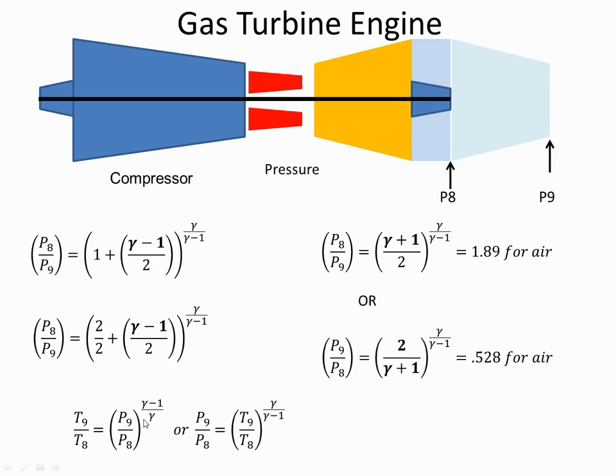So rearranging that, I have an expression for P9 over P8. So if that's P9 and that's P8, and that's P9 and P8, and I can say that they're both equal to each other. So T9 over T8 to the power gamma over gamma minus 1 is equal to 2 over gamma plus 1 to the power gamma minus 1. So I can get rid of the powers here and basically say that T9 over T8 is equal to 2 over gamma plus 1.